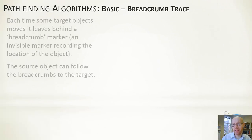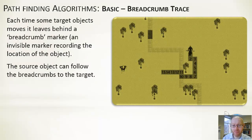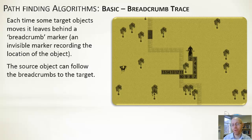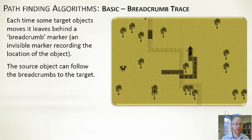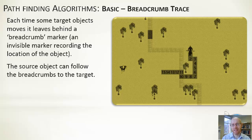A small aside on breadcrumb tracing: as a character walks through the level, you can have it lay down a breadcrumb — a series of invisible points that an AI entity could pick up on and follow, tracking out or following the player or some other entity through the environment.